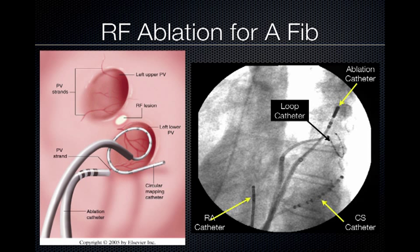Here are the fluoroscopic images. You can see a right atrial catheter, a coronary sinus catheter used to overdrive and confirm that the electrical pathways are totally ablated, the loop catheter, and the ablation catheter all in place.